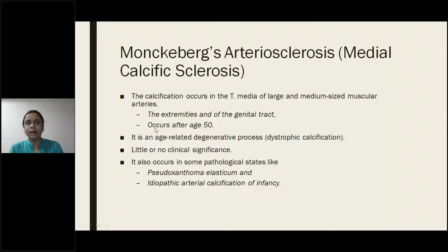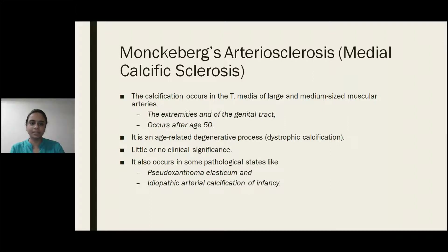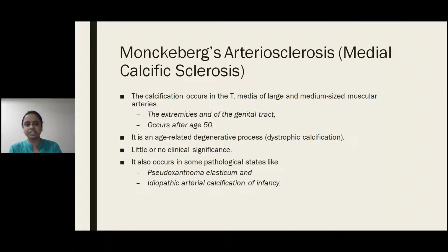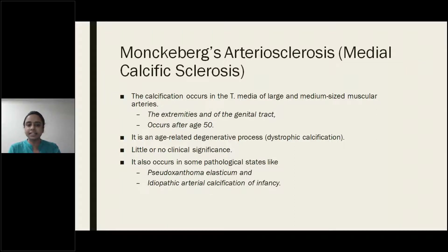This is mostly seen in patients over 50 years of age, particularly post-menopausal women who have undergone hysterectomy — you can see Monckeberg's arteriosclerosis in the uterine arteries. It is an incidental finding; the patient will present with no complaints. It is discovered incidentally on X-ray, ultrasound, or biopsy. The calcification occurs in the tunica media of large and medium-sized muscular arteries — the extremities and genital tract arteries — and it is an age-related degenerative process.